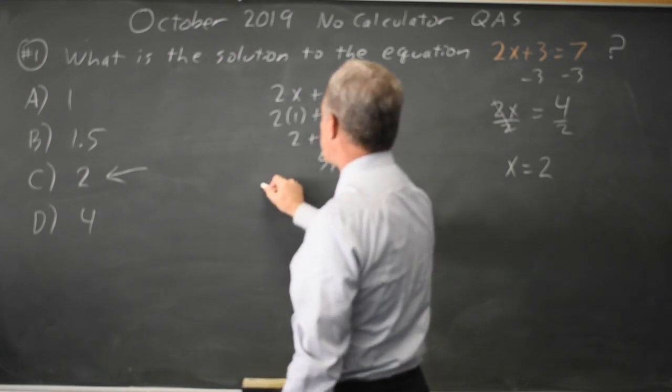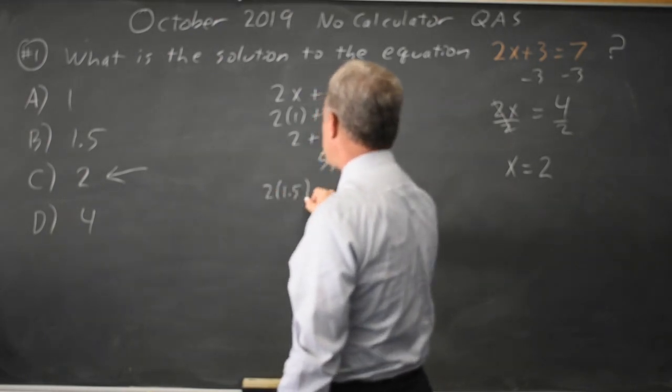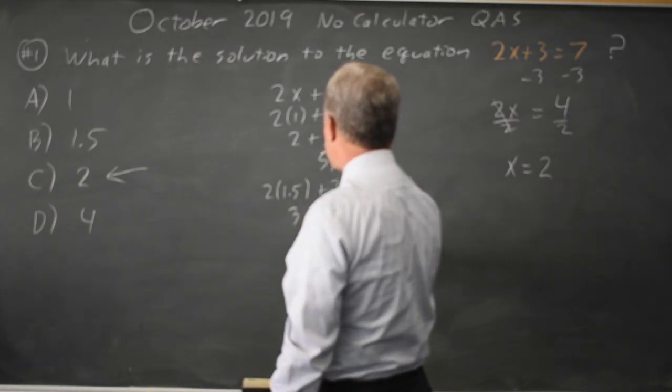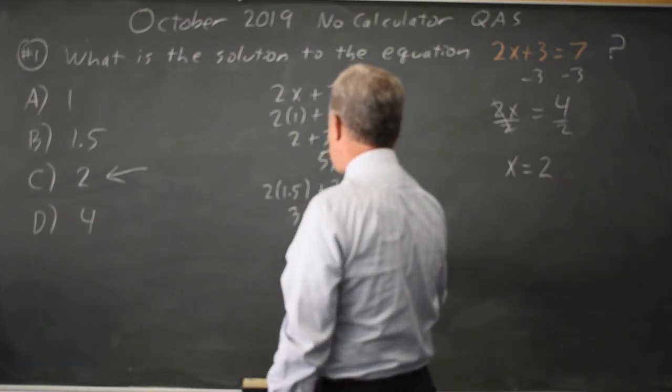If I try 1.5, twice 1.5 plus 3, 2 times 1.5 is 3, so that's 3 plus 3, which is 6, and that's not equal to 7.